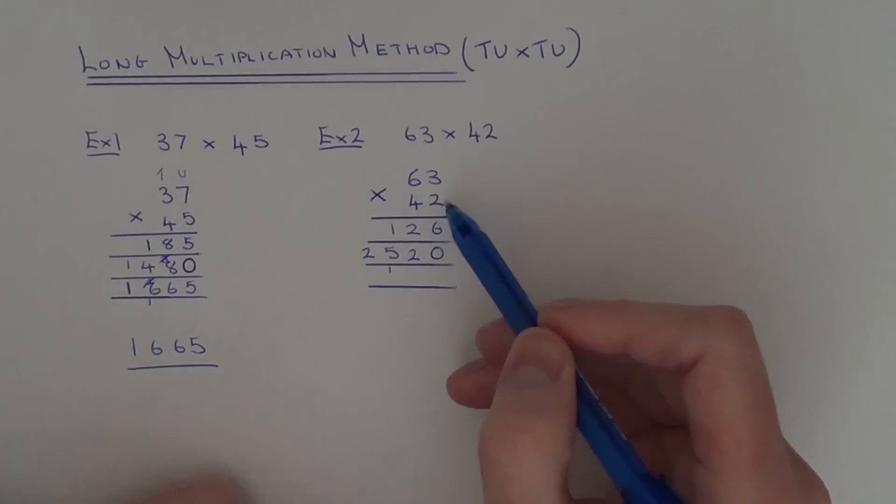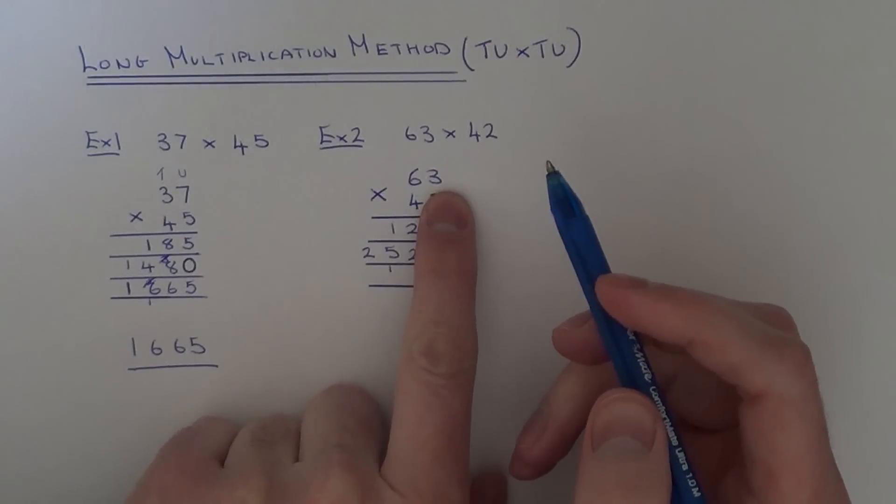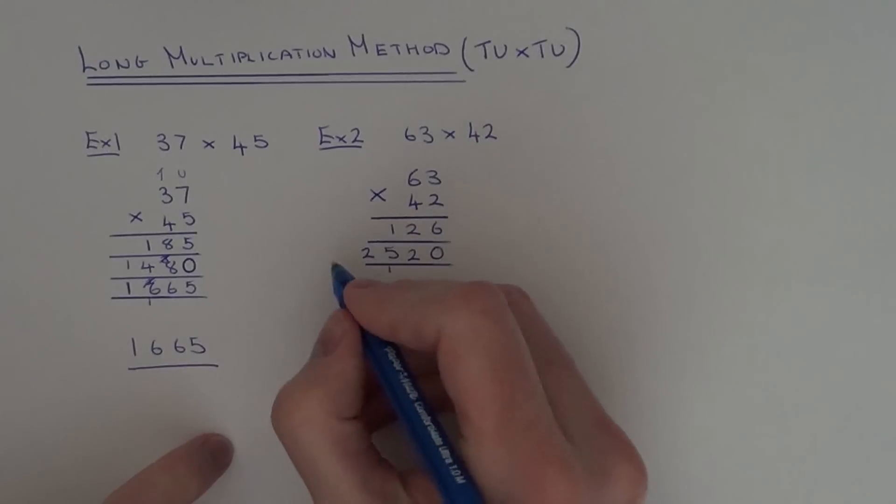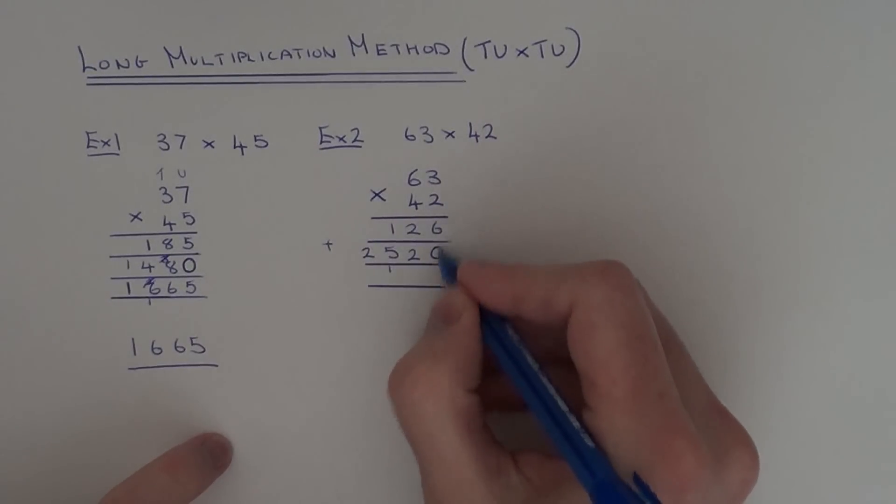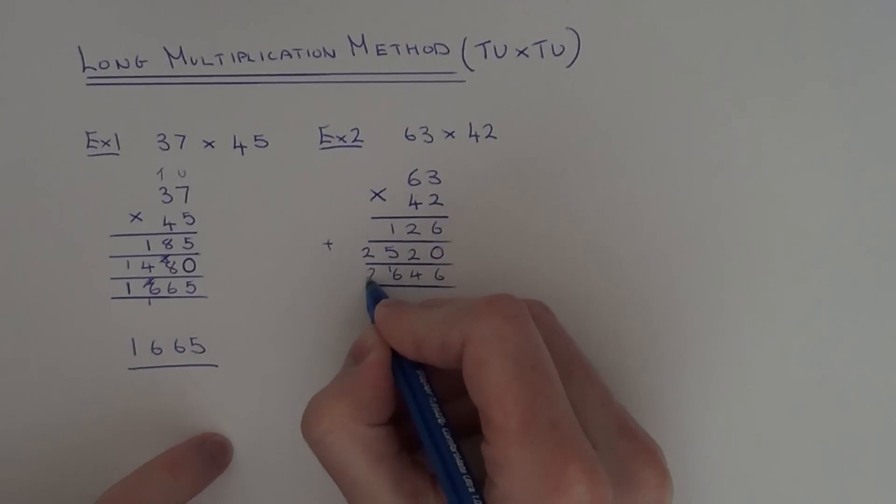So we've done 63 times 2, and then we've done 63 times 40 on our second line. So all we need to do is add these two lines up now. So 6 add 0 is 6, 2 add 2 is 4, 5 add 1 is 6, 2 add nothing is 2. So we get a final answer of 2646.